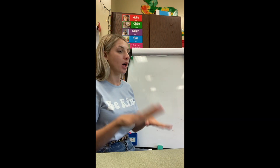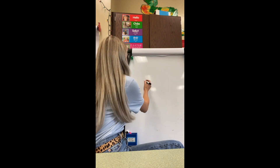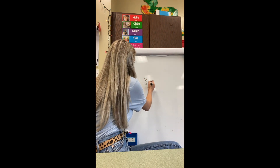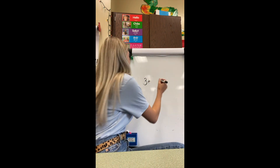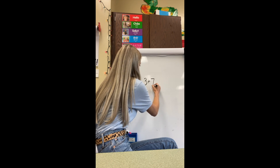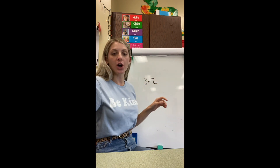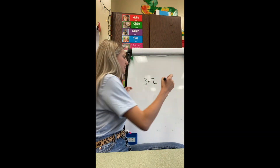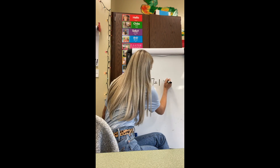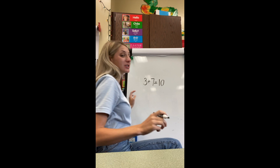So what could our first number sentence be? Well, how many did we tuck at first? Three. Plus, how many were left when we tucked that three? Seven. Equals a total of — how many do we have altogether? 10. Three plus seven equals 10.